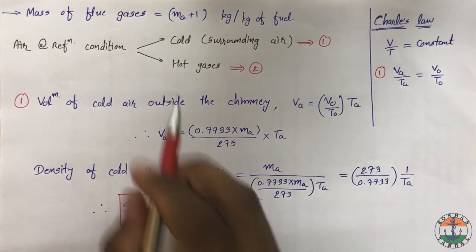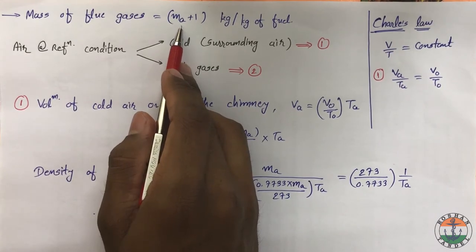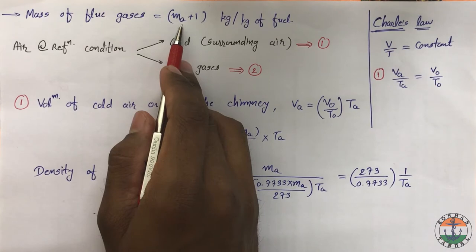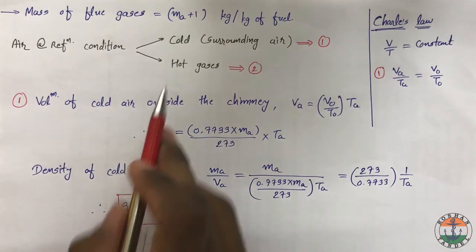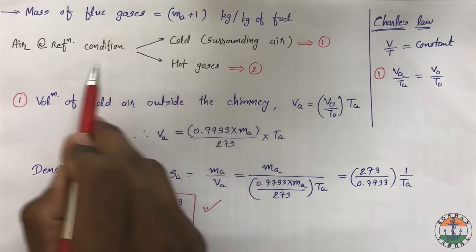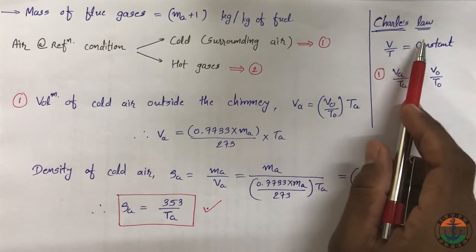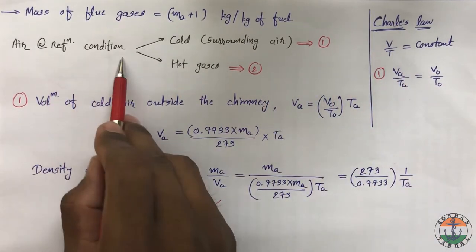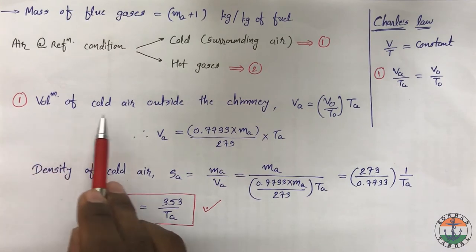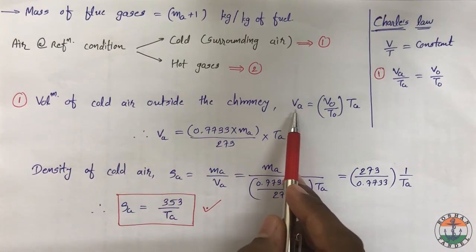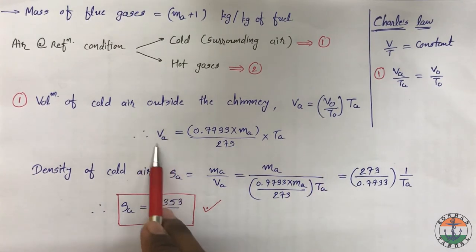Mass of flue gases will be Ma plus 1, where Ma is the mass of air supplied per kg of fuel. For example, supplying 12 kg of air per 1 kg of fuel gives 13 kg of flue gases. Applying Charles' law (V/T = constant) to compare air at reference condition with cold surrounding air, we get volume of cold air outside the chimney VA = (V0/T0) × TA, giving a specific value of VA when V0 and T0 are substituted.